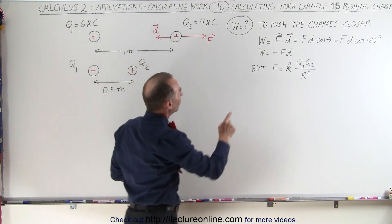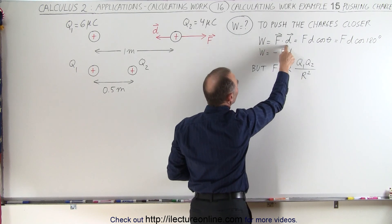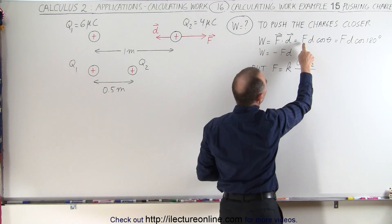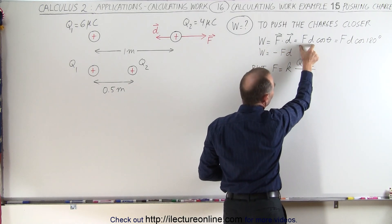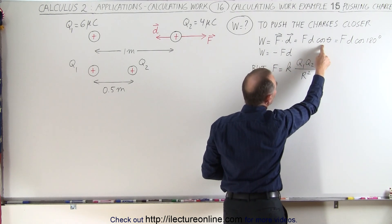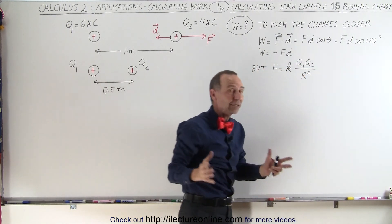And we know that the work done is always equal to the force times the displacement. And in this case that force times the displacement has the magnitude of these two times the cosine of the angle between them, which in this case is 180 degrees.